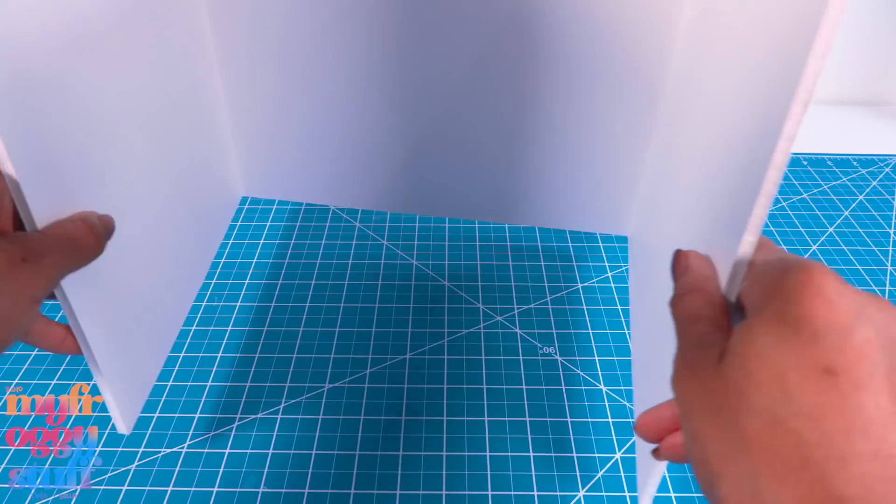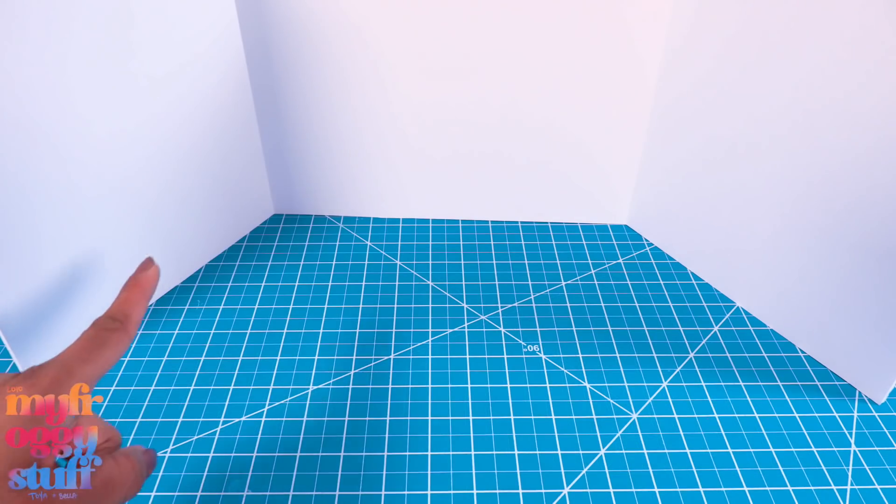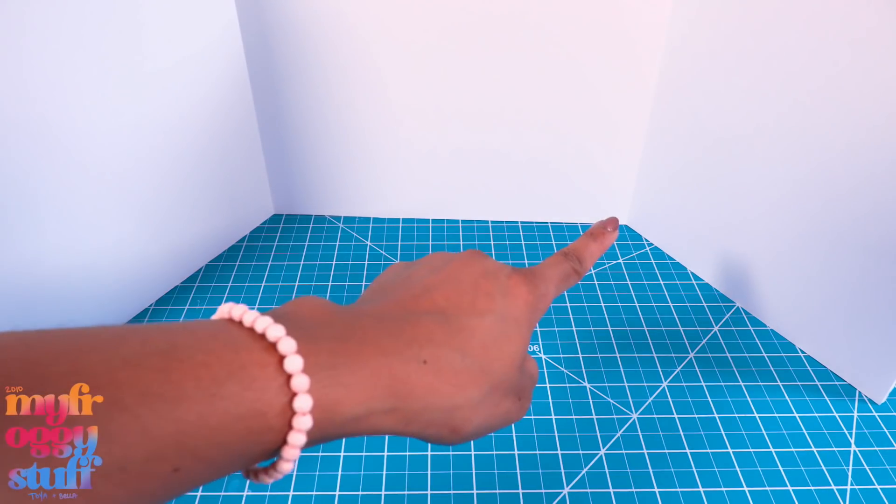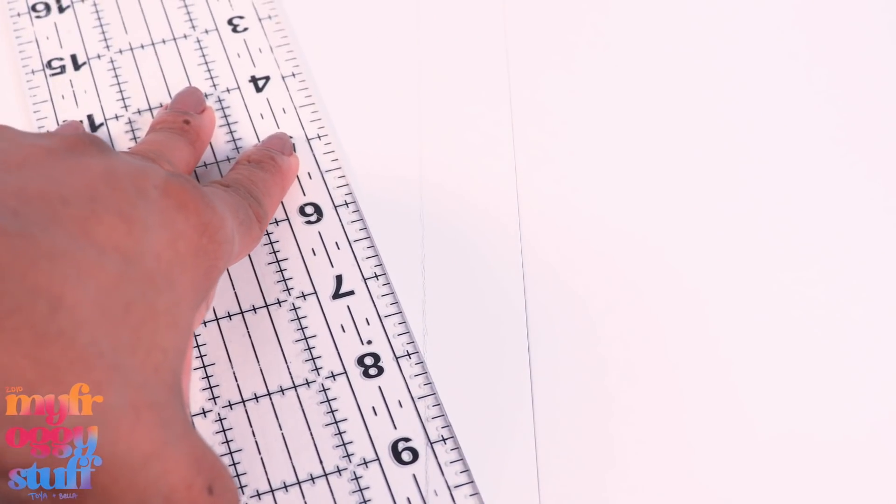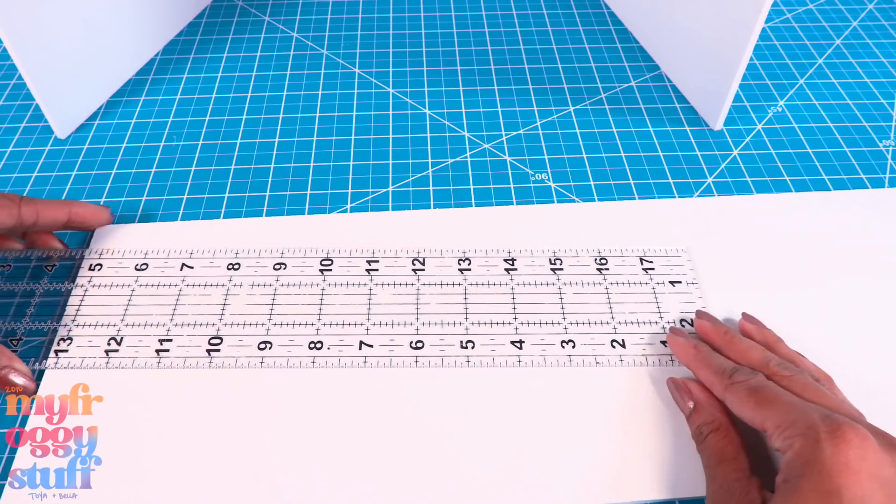Repeat on the other side to make a trifold. We have 9 inches on the sides and 12 inches in the center. Draw a line one inch past the bend on the leftover foam board.